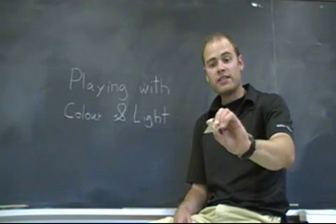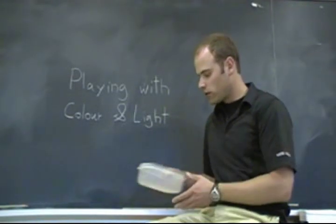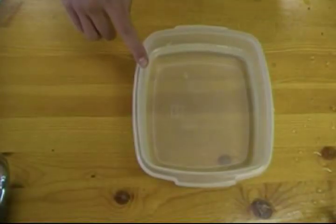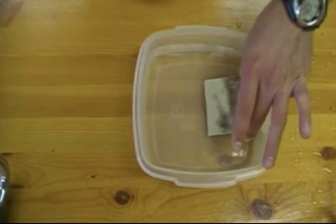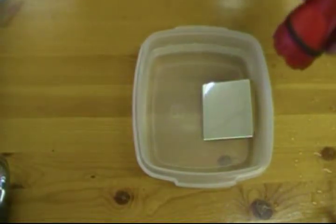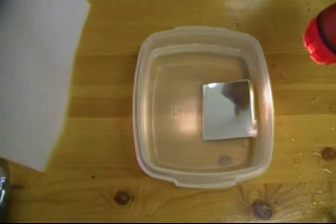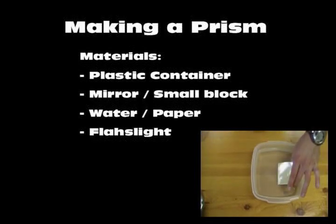A prism diffracts light as it goes through and creates a rainbow spectrum on the other side. Since we don't always have a prism available, we are going to create one using a plastic container, a mirror, and water. With water in the container, prop the mirror inside at a slight angle so the water just goes over the top of the mirror. Dim the lights and use a flashlight so the beam goes through the water, reflects off the mirror, back through the water, and onto a sheet of paper on the other side.